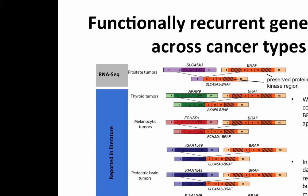We can look at recurrence across multiple samples. Here's an example where they looked across multiple tumor types — prostate, thyroid, etc. — and found that a single partner, BRAF, was always fused to another 5' gene. They would have actually missed this if they hadn't looked across multiple cancer types.